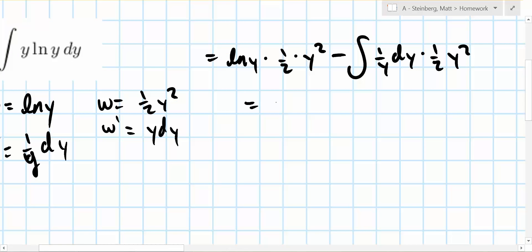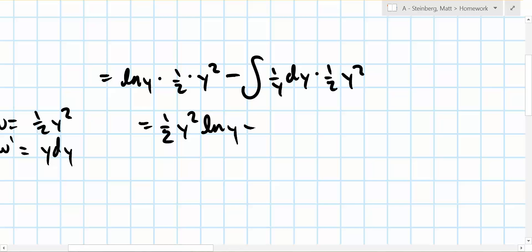So that's all equal to 1 half y squared ln y minus, we can pull the 1 half outside the integral. And then y squared over 1 over y is just equal to y.